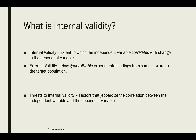What is internal validity? Internal validity is defined as the extent to which the independent variable correlates with the change in the dependent variable. So when you think of internal validity, the key word you're thinking of is correlation. And external validity is defined as how generalizable experimental findings from the sample are to the target population. When you're thinking about external validity, the key word is generalizability.